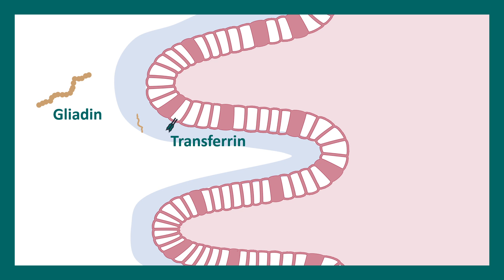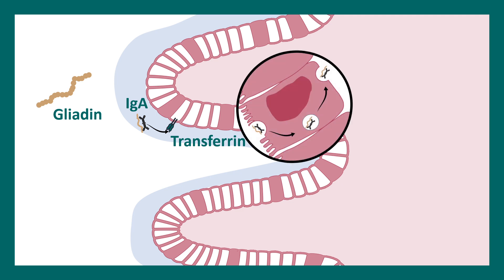So in the small intestine — you can see a portion of the small intestine here — gliadin gets assembled with secretory IgA. Generally, this immune complex is destined to be destroyed. But in rare occasions in celiac disease, this complex actually binds to the transferrin receptor, which is otherwise important for iron absorption or iron metabolism. After it binds to transferrin, it gets transcytosed inside the cells and gets released on the other side, known as the lamina propria.